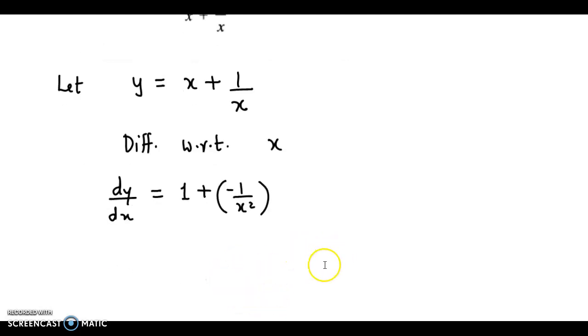So we simplify this further. We get 1. Now plus and this is negative 1 here. So it becomes minus 1 upon x square.